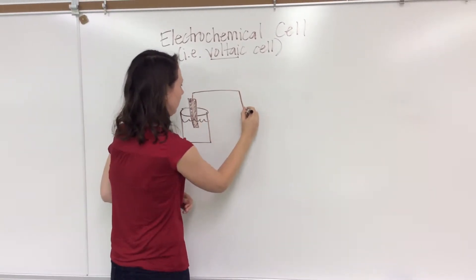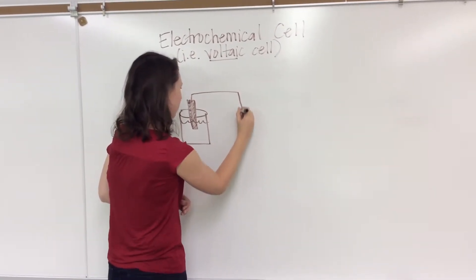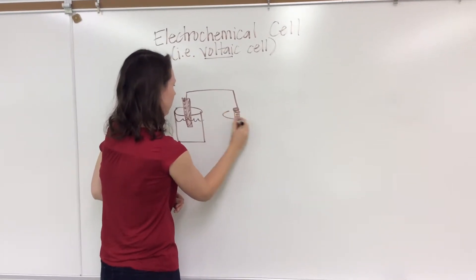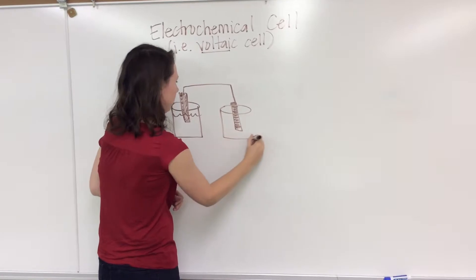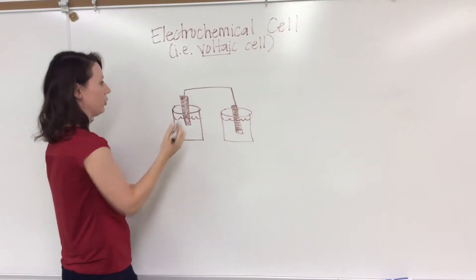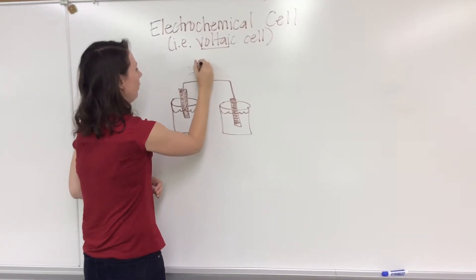Then we've got our wire, our second piece of metal, and beaker number two. The solution you use and the metal you use are completely your choice. And then we've got our light bulb.